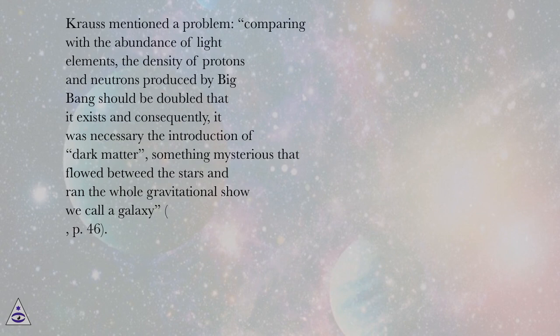Krauss mentioned a problem: comparing with the abundance of light elements, the density of protons and neutrons produced by Big Bang should be doubled that it exists and consequently, it was necessary the introduction of dark matter, something mysterious that flowed between the stars and ran the whole gravitational show we call a galaxy, page 46.